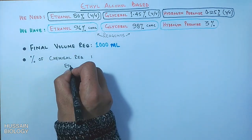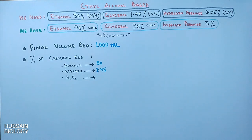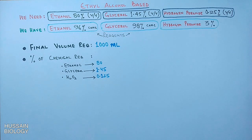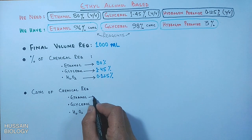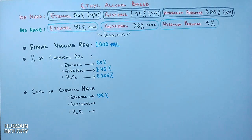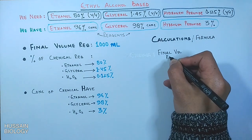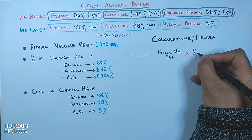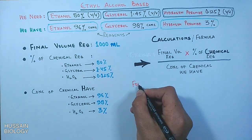The percentage of chemicals required: ethanol 80%, glycerol 1.45%, and hydrogen peroxide 0.125% in the final solution of 1000 ml. The percentage of chemicals we have available: ethanol 96%, glycerol 98%, and hydrogen peroxide 3%. The formula is: final volume required multiplied by percentage of chemical required, divided by the percentage of chemical we have.